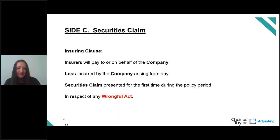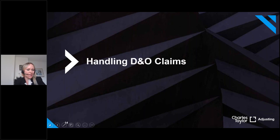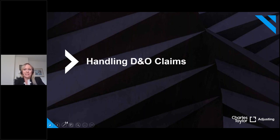Side C cover provides cover for the company itself when it is named as a defendant in a securities claim, with a retention usually applying. Securities claims are those related to shareholder value purchased by publicly listed companies. Side C was developed as a product to fill the gap where a company was named as a defendant alongside a director or officer and there were allocation disputes. Cover under Side C is sometimes subject to a separate limit. It is optional cover and not always purchased as part of a D&O policy.